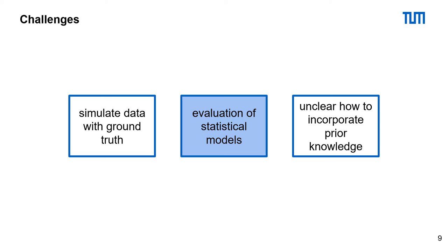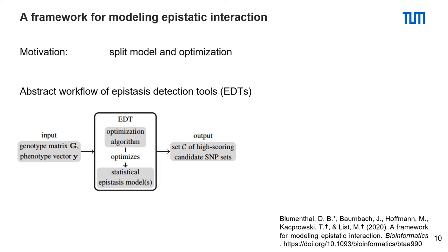I now want to talk about the problems we identified with the current evaluation of statistical models used in literature and how we tackled them. For this, we published a paper: 'A Framework for Modeling Epistatic Interaction in Bioinformatics.' Our main idea was to split the optimization algorithm from the statistical epistasis model. At the bottom, you can see the abstract workflow of an epistasis detection tool.